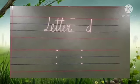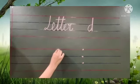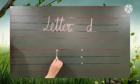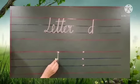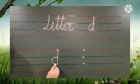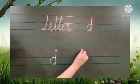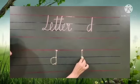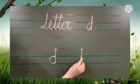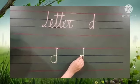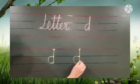Now babies, let's learn how to write print letter D. Keep the pencil on dot, come down, make a standing line. Keep the pencil on middle dot. Again, keep the pencil on dot, come down, make a standing line. Again, keep the pencil on middle dot, take a left one, come down, and make a curve. Like this.